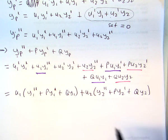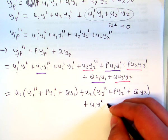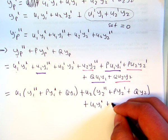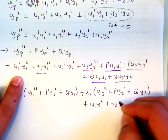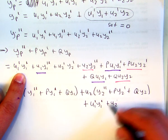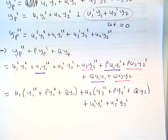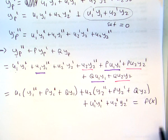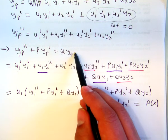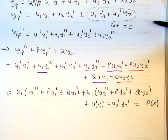And now the other two terms that are left are u1 prime y1 prime plus u2 prime y2 prime. Okay. And this should all equal f of x, since that's what this equation equaled at the original, or that was the original equation.